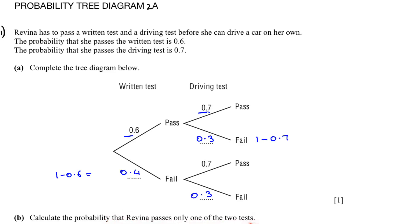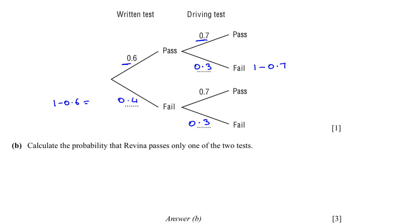In part b, we have to calculate the probability that Raveena passes only one of the two tests. So it means she either passes the written test and fails the driving test, or she fails the written test and passes the driving test. We have to write: passes the written test but fails the driving test, so it will be 0.6 times 0.3. Then you have to put a plus. When there is an 'or' you put a plus. The other one is fails the written test but passes the driving test.